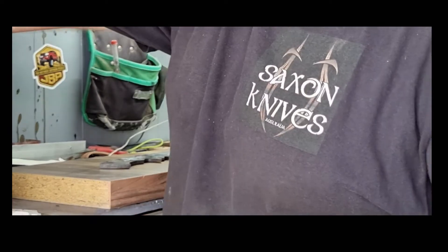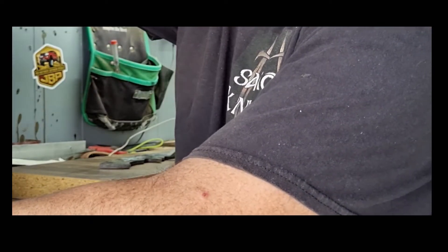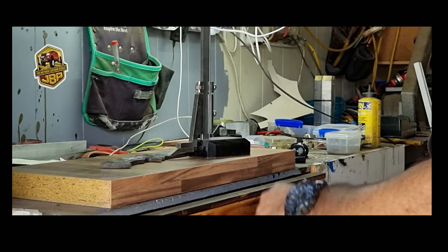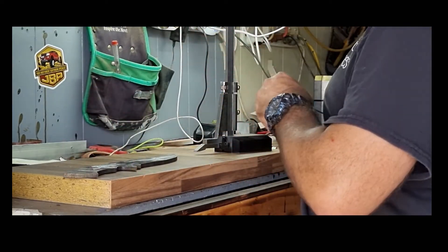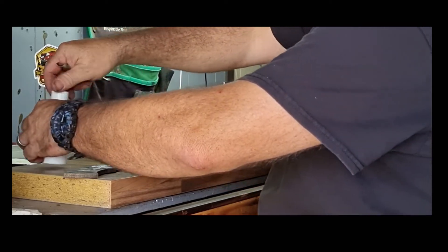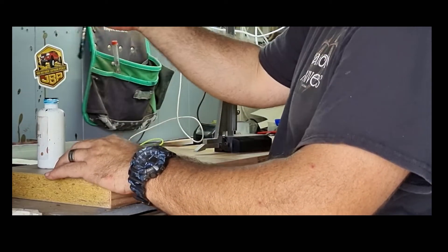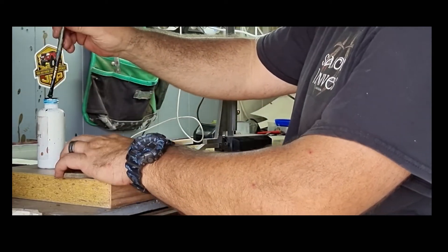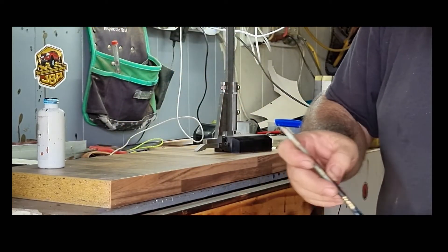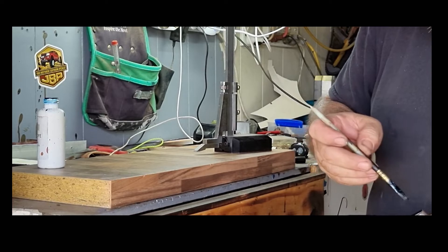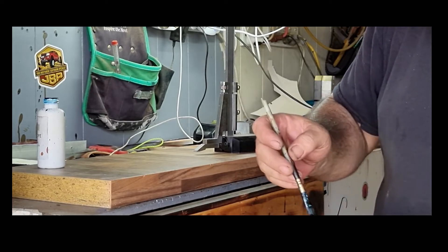Okay, so now we've done the surface grinding. We're going to put some layout lines on our blade. We're currently at about 6.4 millimeters at the ricasso, about 6 down at the very tip, which is pretty much exactly where we want to be.